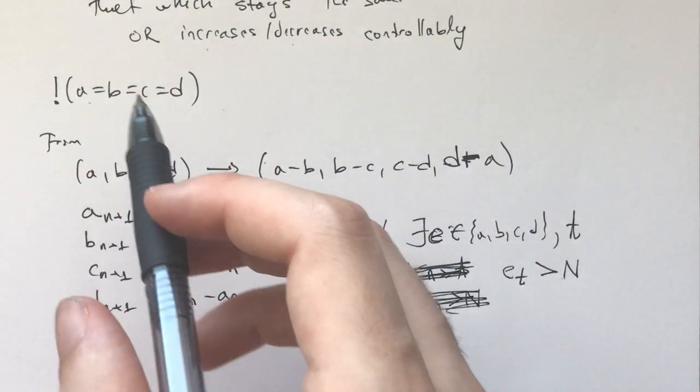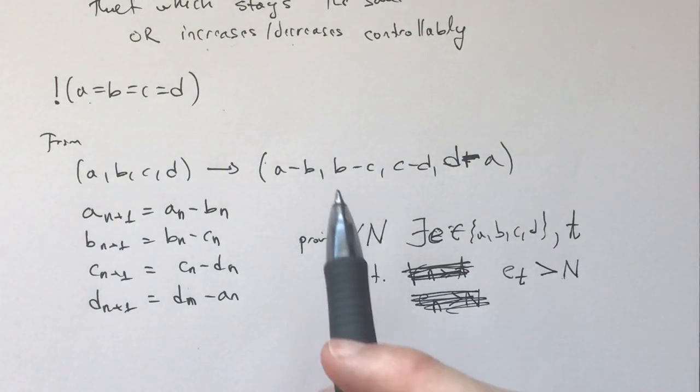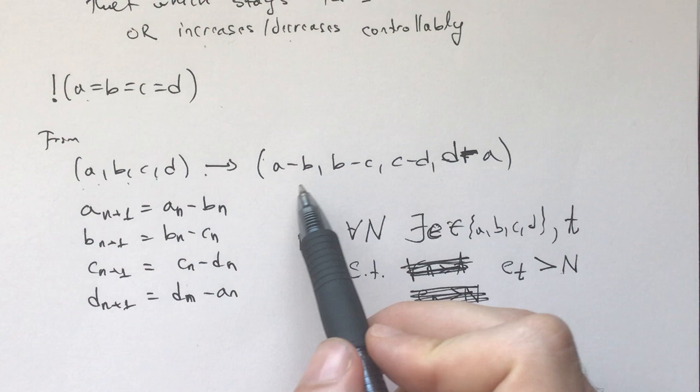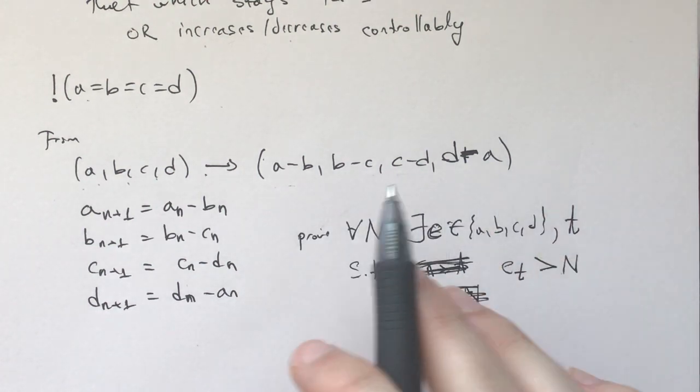We have all of these numbers a, b, c, d, are not all equal, and at every time we get from a, b, c, d to a minus b, b minus c, c minus d, and d minus a.